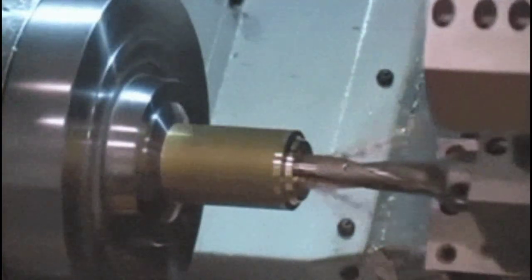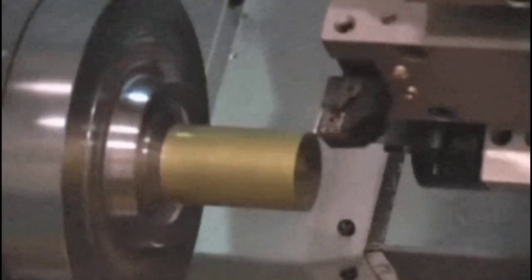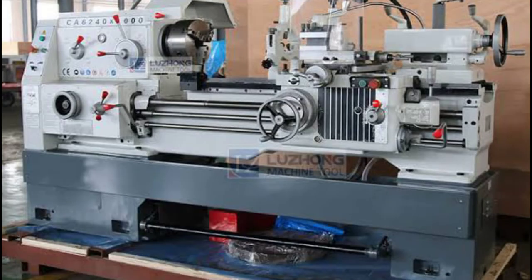A lathe is a machine that rotates the piece on the axis in order to perform various operations like cutting, passing, knurling, deformation, and more.